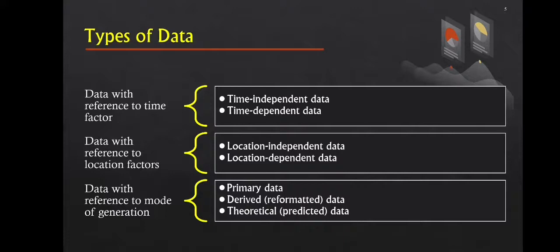The second type is data with reference to location factors. There are two categories: location-independent data and location-dependent data. Location-independent data are independent of the location of objects measured. Examples include data on pure physics and chemistry. Location-dependent data are dependent on the location of objects measured. Data in earth sciences and astronomy normally belong to this category.